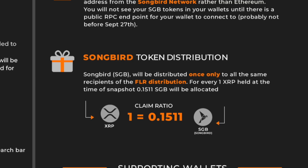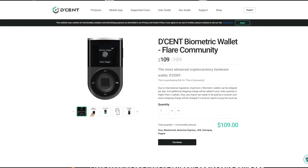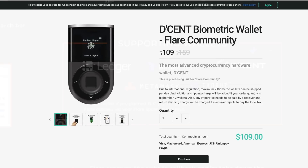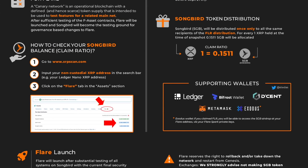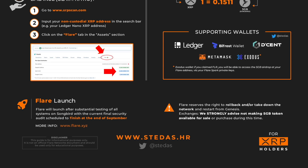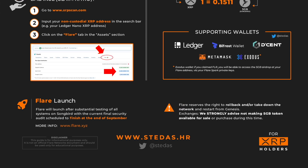Songbird will be distributed only once to all recipients of the Spark distribution. For every one XRP held at the time of the snapshot, 0.1511 Songbird will be allocated. Supporting wallets include Ledger (hardware wallet), Bifrost wallet (free software wallet on your phone), the Dcent wallet (biometric hardware wallet — with a 50% off link in the description), MetaMask (web3 browser wallet), and Exodus. Importantly, Flare reserves the right to roll back and/or take down the network and restart from genesis, and exchanges are strongly advised not to make Songbird tokens available for sale.